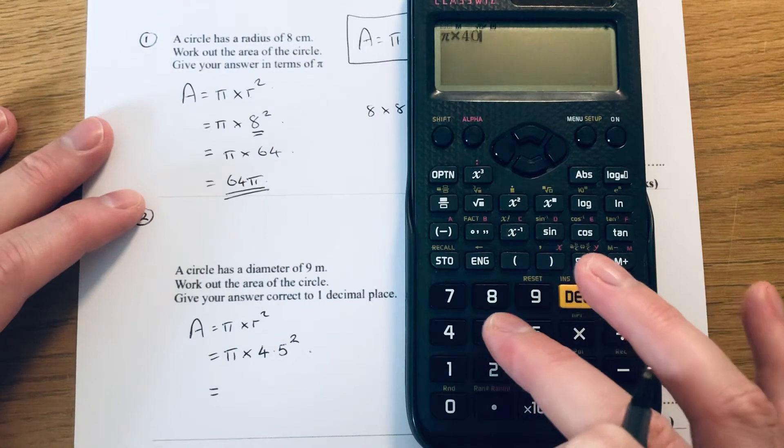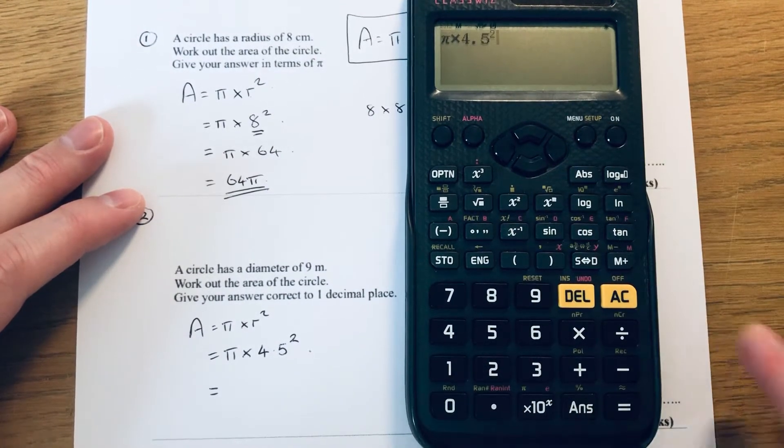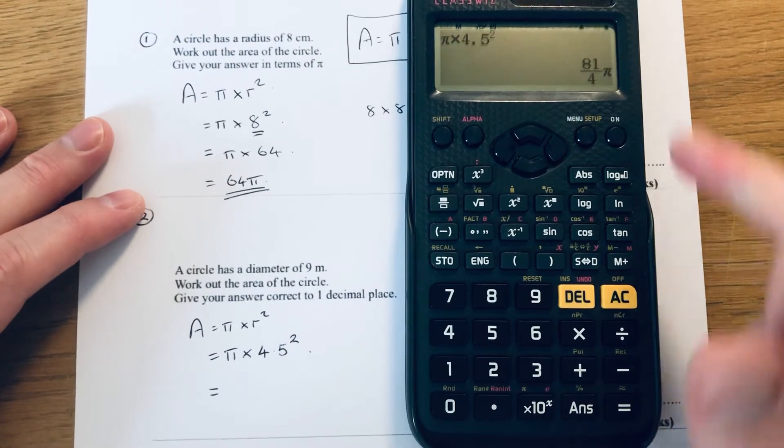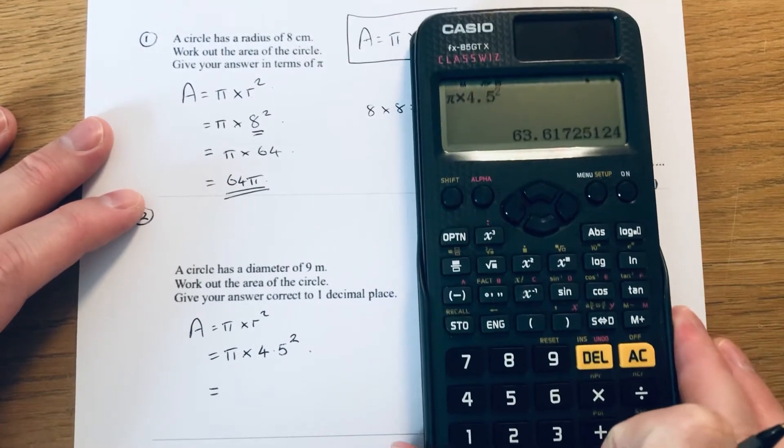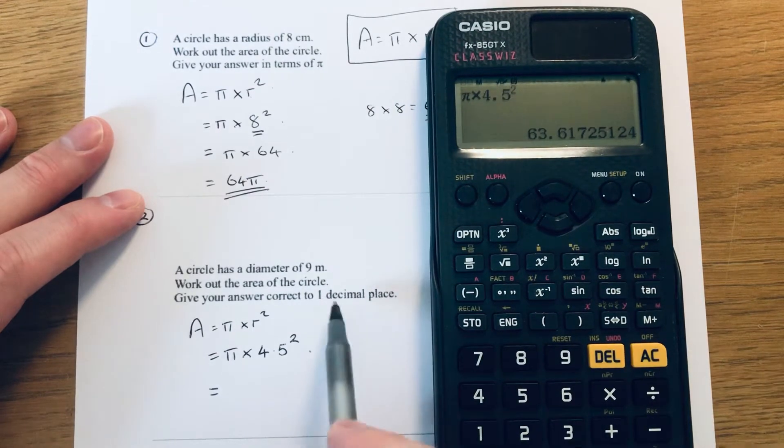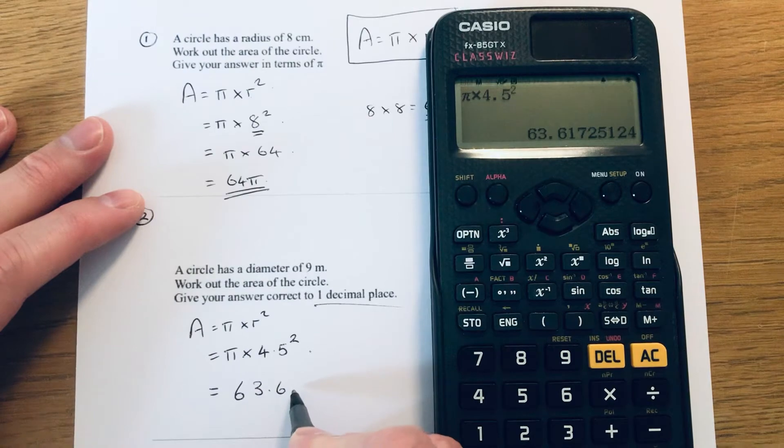That's the exact answer. If we SD it, we get the answer as a decimal. So it's got to be to one decimal place, so it's 63.6 meters squared.